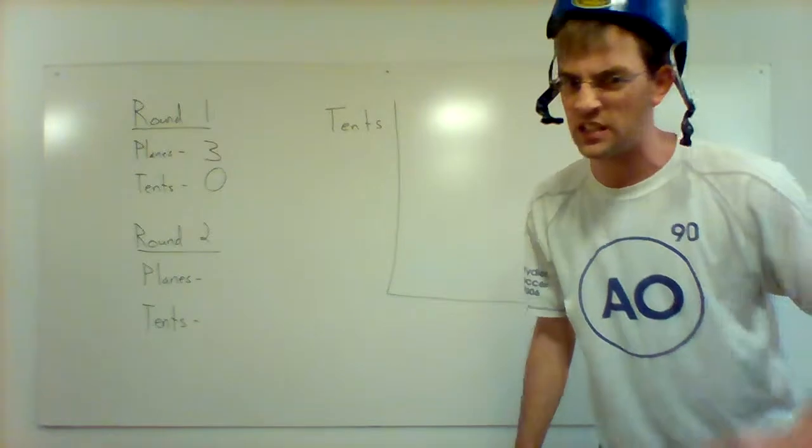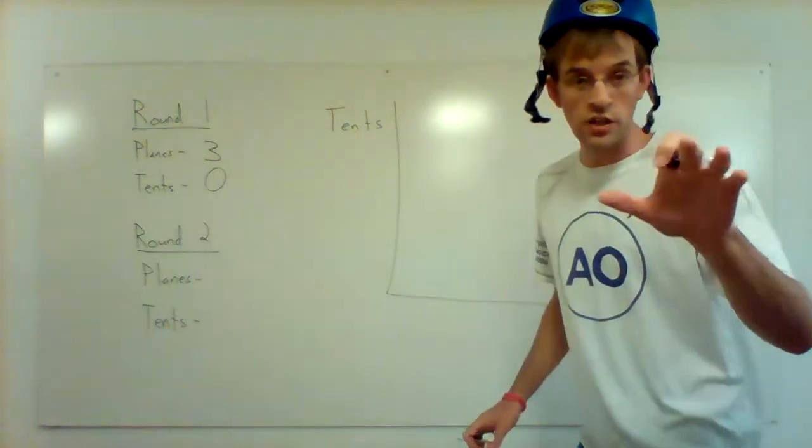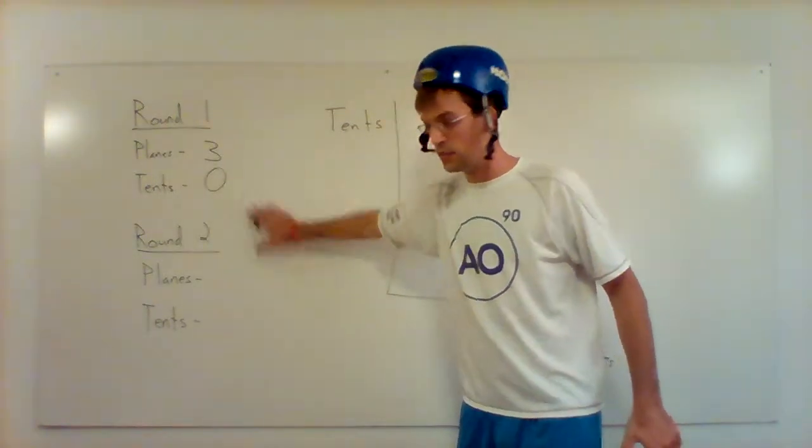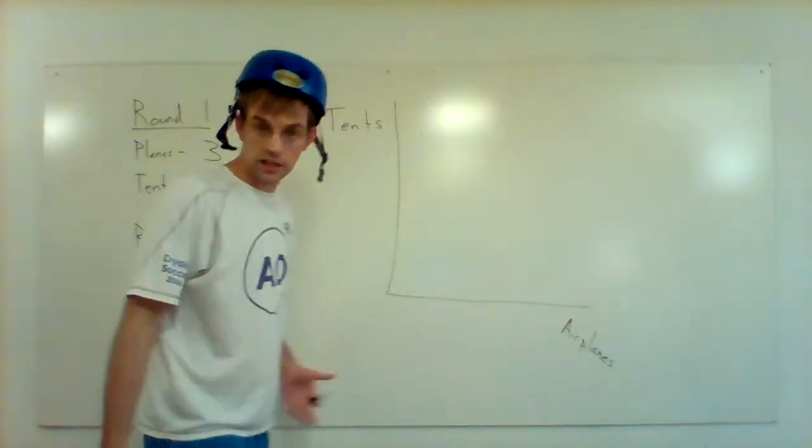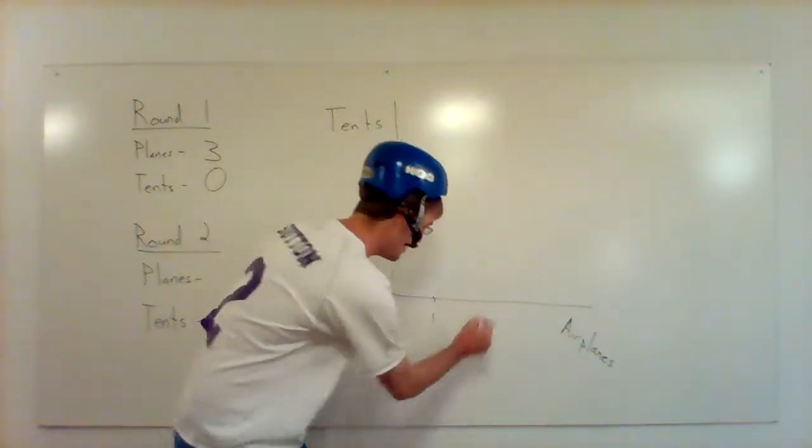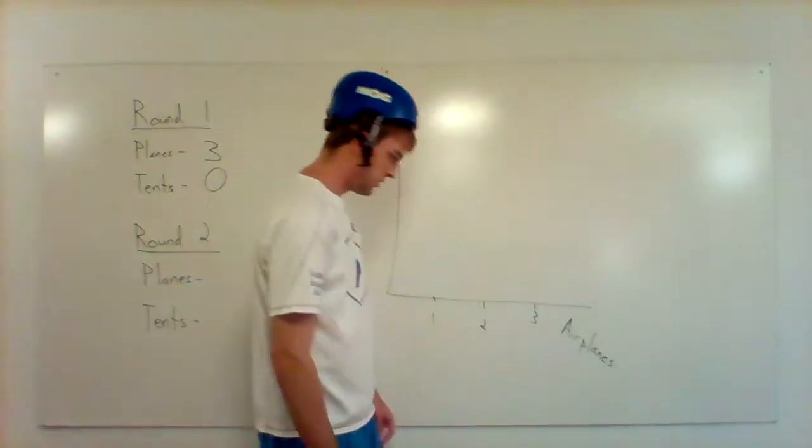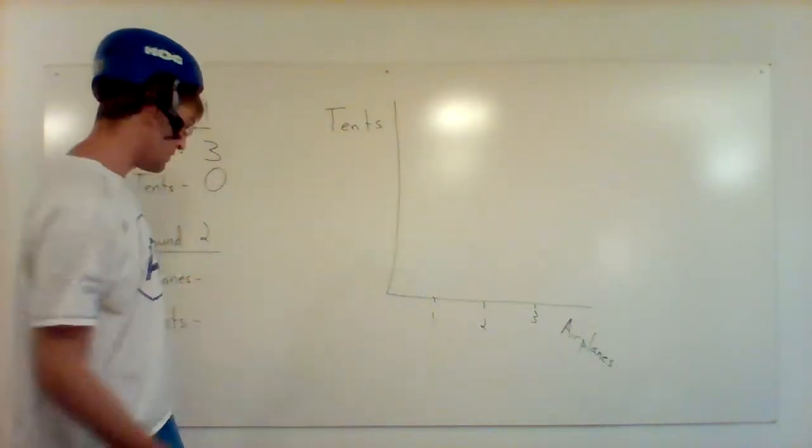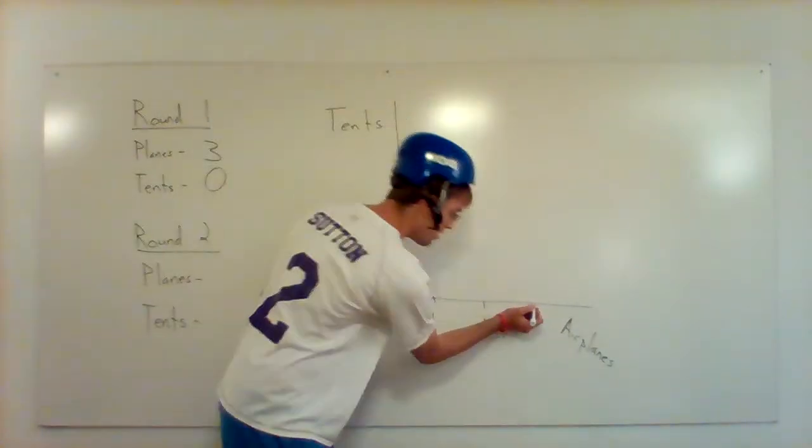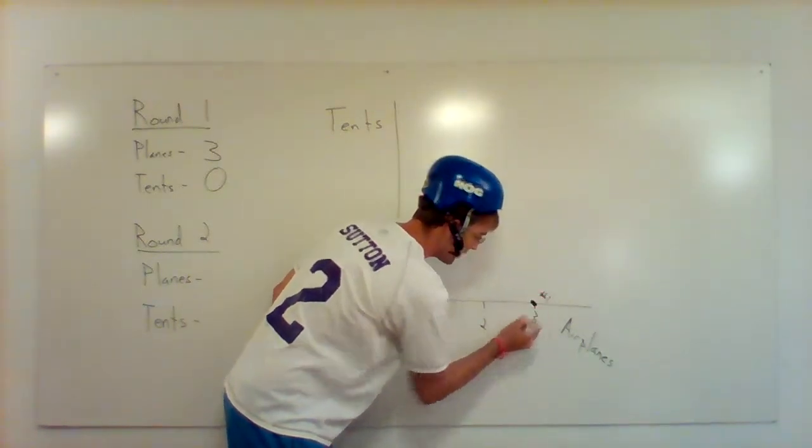If you made five planes, that's fine too. Your graph is going to look a little different. So what I want you to do now, I want you to plot this point. So I made three planes and zero tents. If we treat this like it's a graph, I got one airplane, two airplanes, and I'll say three airplanes. But I made zero tents. Zero tents is like here. So three and zero. And I'll just label that with a number one.